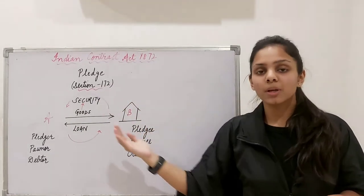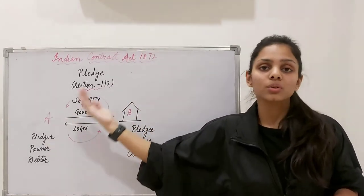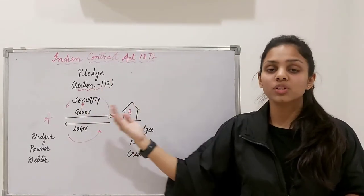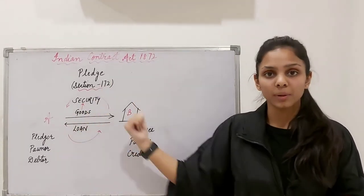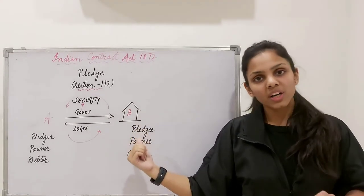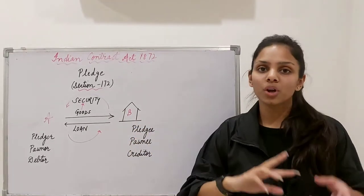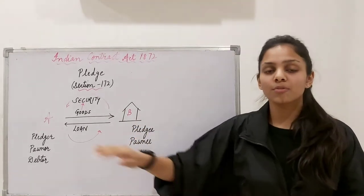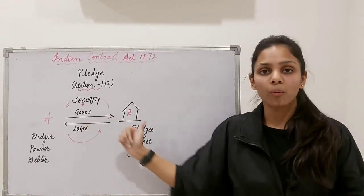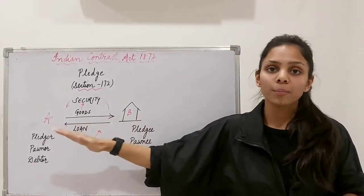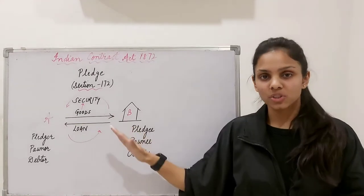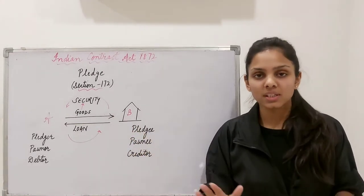In Contract of Bailment, the two parties are the bailor and bailee. In Contract of Pledge, the terminologies change — the parties are from pawner to the pawnee, or from pledger to the pledgee. These are the two different parties to a Contract of Pledge.